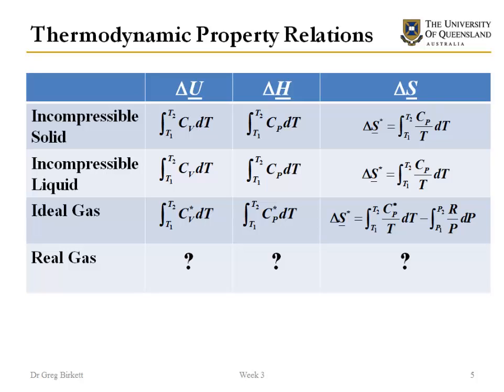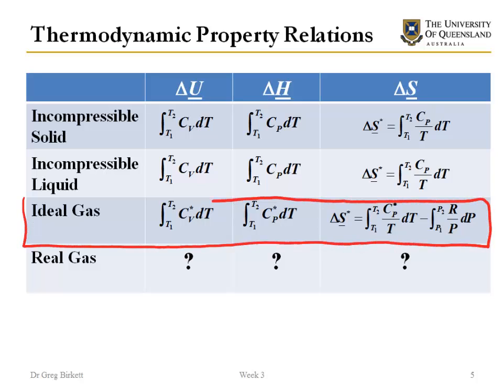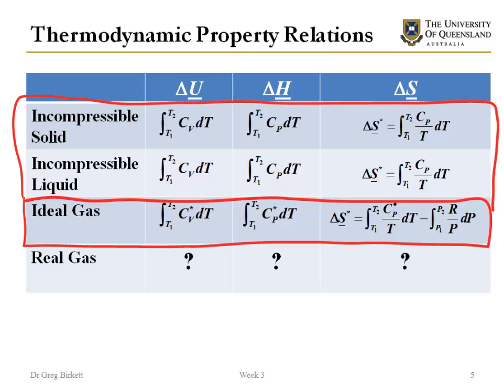So far in this course we've been calculating changes in internal energy, enthalpy, and entropy, but we've been doing them in particular cases. The case we've been looking at the most is what is the change in those things for an ideal gas. We've got equations for that, and we've got equations for incompressible solids and incompressible liquids, but we don't have an equivalent equation for a real gas or a real liquid — and those question marks are the ones we're going to fill in in this section.